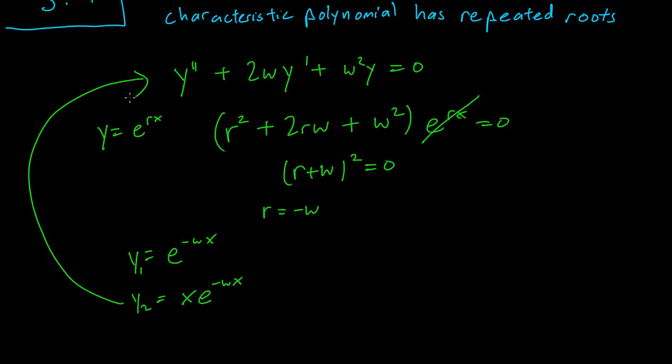Well, that's all there is to it. And so the general solution to this sort of problem when there's a double root is just y equals c1 e^(-wx) plus c2 x e^(-wx).